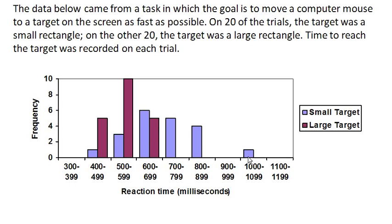This is still not a great representation of the data. Another option would be something called a frequency polygon. The idea is basically the same, except we put a dot at each interval at the same height that the histogram bar would be, and then we connect the dots.